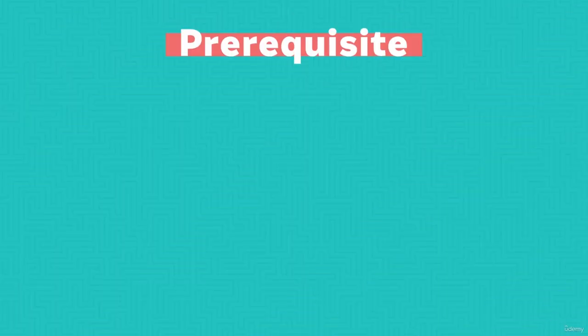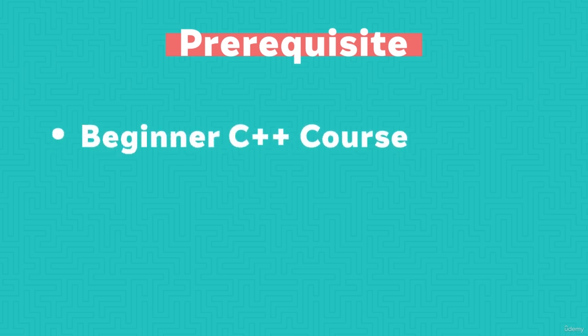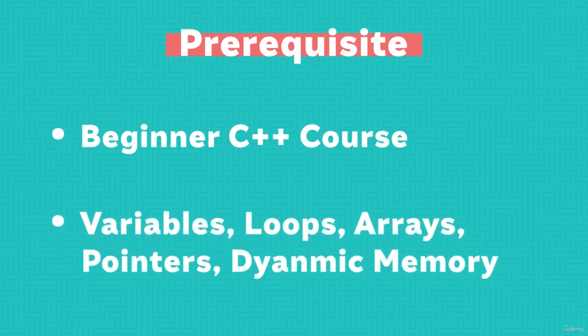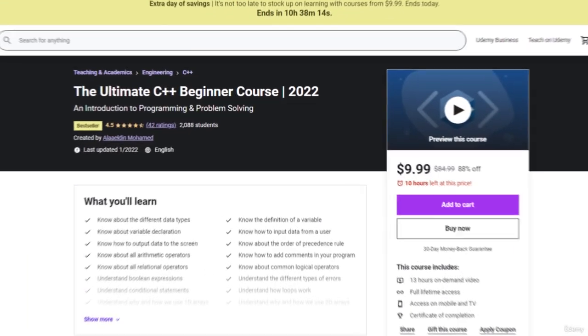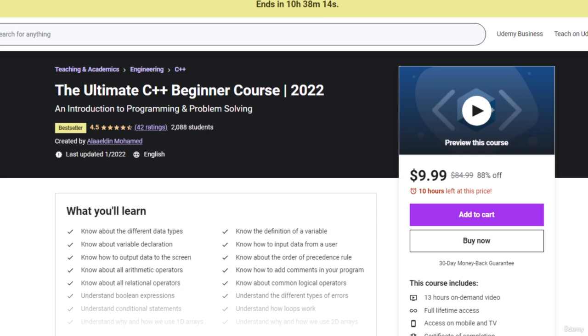Welcome to my advanced C++ course. Before we actually start the course, allow me to discuss the course prerequisites. This course assumes you have some basic knowledge of C++. For example, you need to be familiar with variables, loops, arrays, and many other beginner programming concepts. If you're completely new to programming, I recommend you check out my beginner C++ programming course. The link will be in the description below.